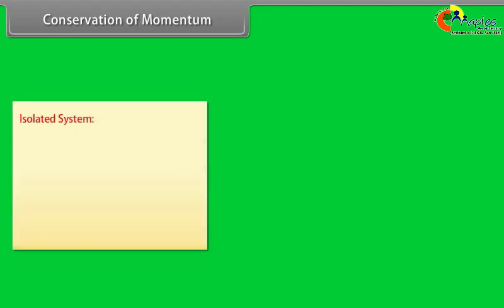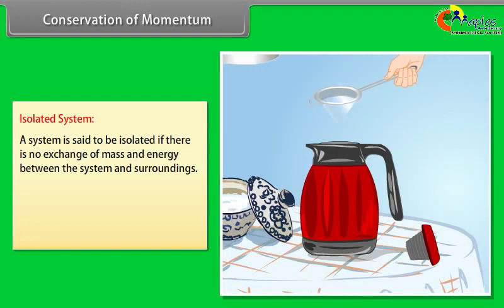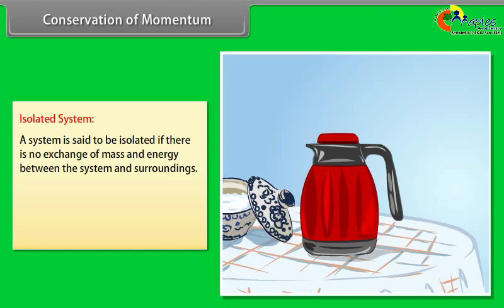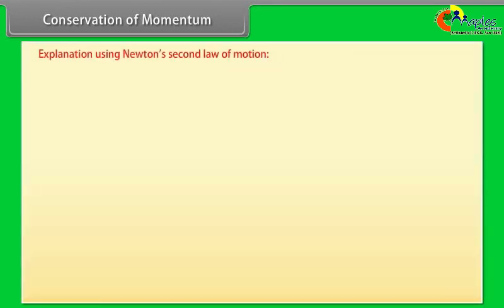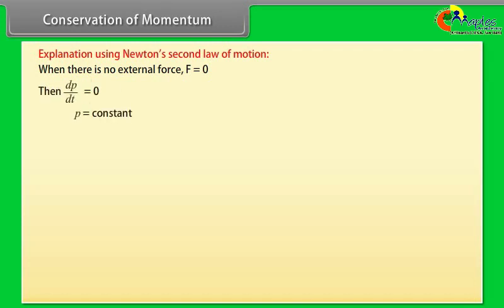An isolated system is one in which there is no exchange of mass and energy between the system and surroundings. Conservation of momentum states that in the absence of an external force, the total linear momentum of an isolated system remains the same. When F = 0, dP/dt = 0, so P = constant, meaning M₁V₁ = M₂V₂.